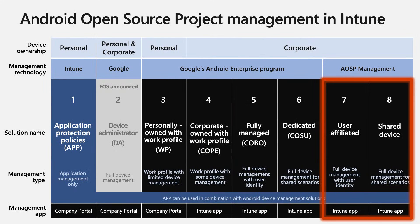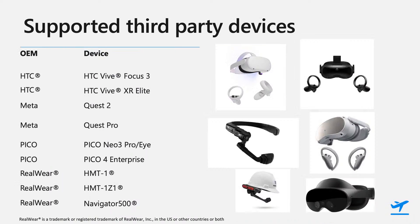First off, starting with some updates to capabilities on the Android platform. Intune today supports the full set of Android devices including a range of specialized devices that run on Android Open Source Project, or AOSP. We support a growing range of AOSP devices where you can manage device configuration, compliance, certificate, network profiles, and more. And now our latest update on AOSP management is the ability to deploy mandatory line of business apps to these devices.